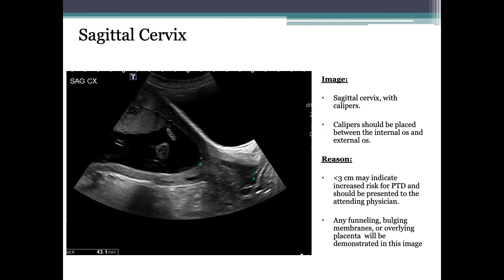The sagittal cervix: an image of the cervix in the sagittal plane should be acquired at the beginning of the exam with a fully distended maternal bladder. Landmarks include a mid-sagittal view of the cervical canal in continuity with the vagina and the lower uterine segment. Calipers should be placed between the internal os and external os. A measurement of less than three centimeters may indicate increased risk for preterm delivery. Any funneling, bulging membranes, or overlying placenta will be demonstrated in this image.